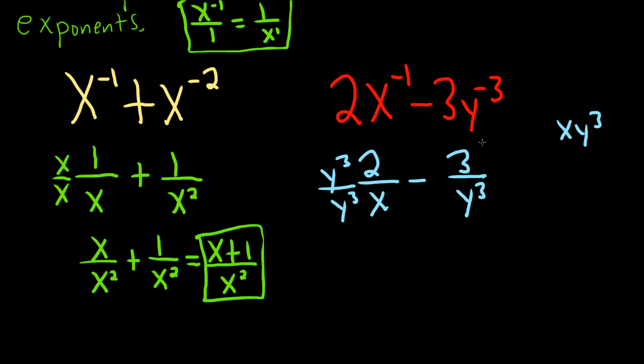And on the right, we're missing an x, so we multiply by x over x. So this will be 2y cubed over, I'm going to write this as xy cubed,